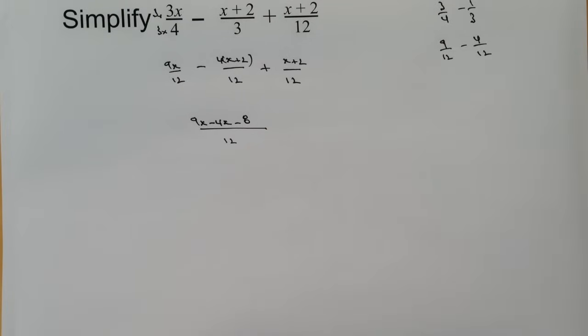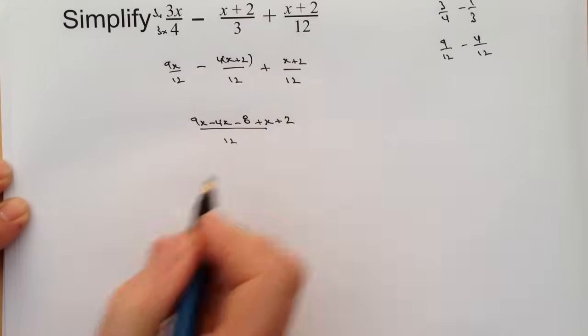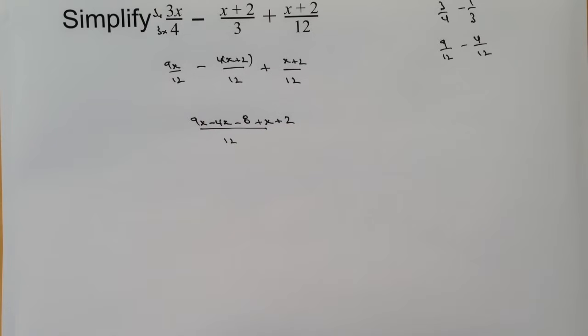So the first two terms have now become 9x minus 4x minus 8, and then the last bit is going to stay as it is, as x plus 2. We're going to tidy this up a little bit.